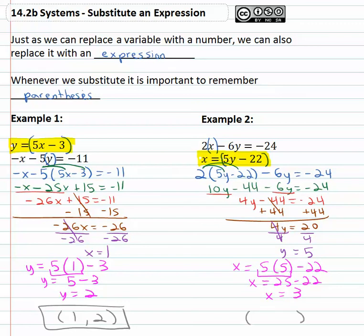So our solution, always x comma y in alphabetical order, is 3 comma 5. Just as we replace a variable with a number, we can replace it with an expression in parentheses to solve the system of equations.